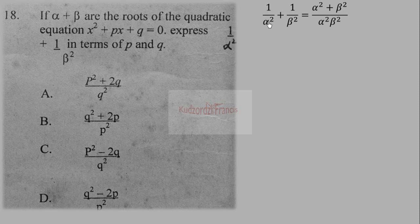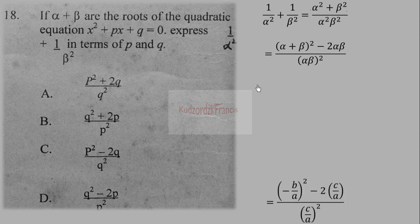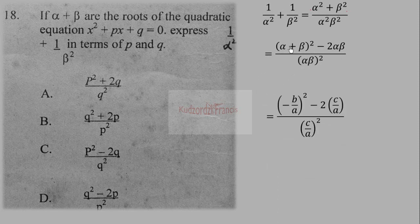After finding the LCM, we get (β² + α²) / (αβ)². We use the identity α² + β² = (α + β)² − 2αβ, all over (αβ)². We know that α + β = −b/a and αβ = c/a.